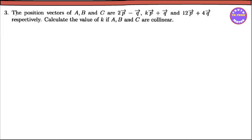The position vector formula — the midpoint formula. The position vector is given for points A, B, C. We have OA vector, OB vector, and OC vector.